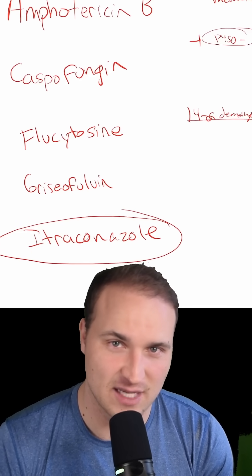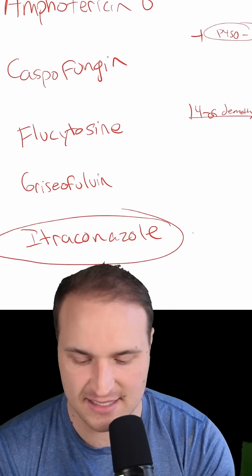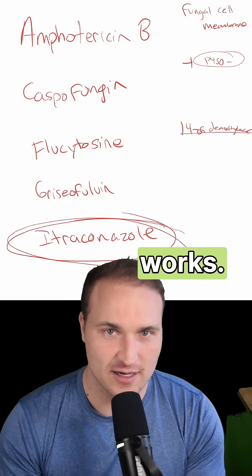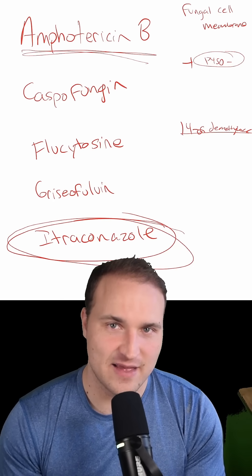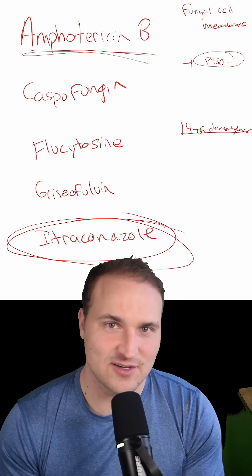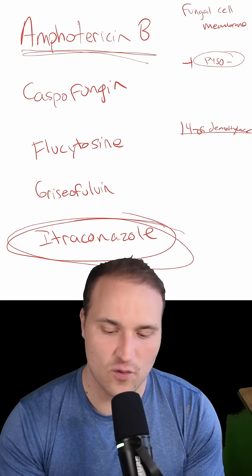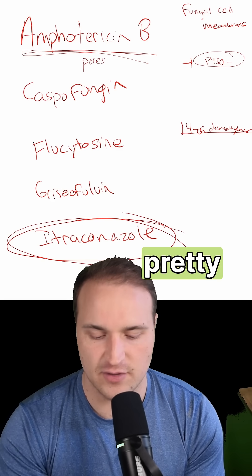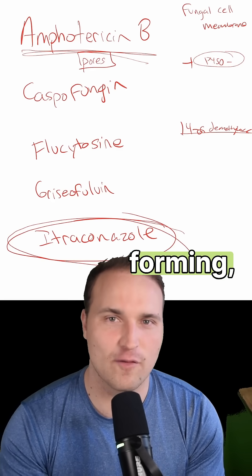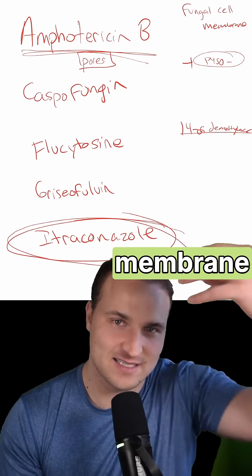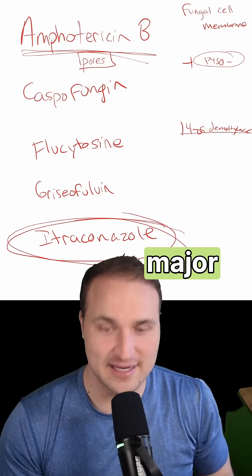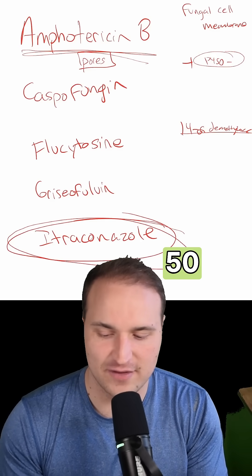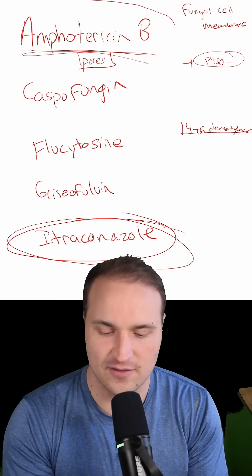That causes defective cell membrane synthesis — that's how it works. Amphotericin B binds ergosterol and forms pores; that one's pretty intense. It's pore-forming, causes membrane leakage, and it's not known for major CYP450 inhibition, so that's why it's not amphotericin B.